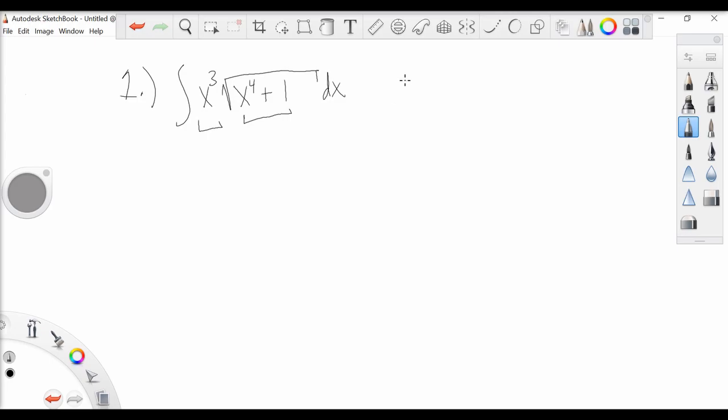As we saw in the last video, we're going to use the inner function as our u. So we say u equals x to the fourth plus one. Now our du is equal to 4x cubed dx.